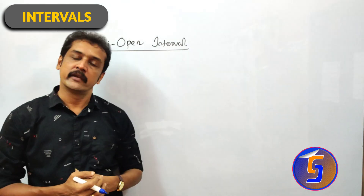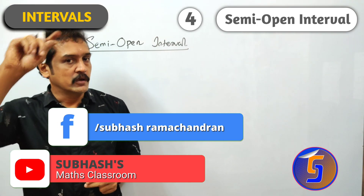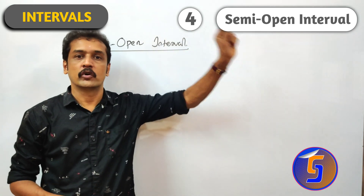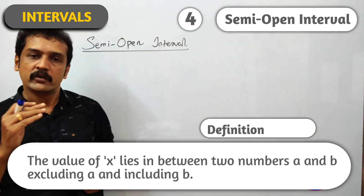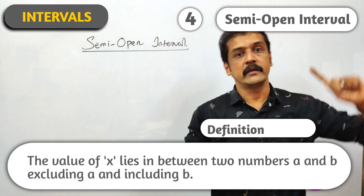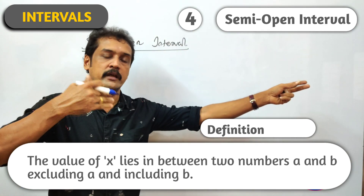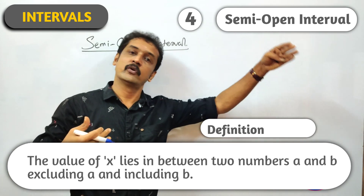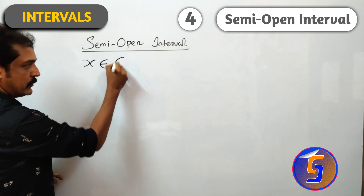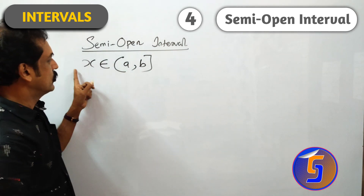The fourth interval is semi-open interval. Semi-open interval starts with an open bracket and ends with a closing square bracket — simple bracket then square bracket. The value of x lies in between two numbers a and b, excluding a and including b. It can be denoted in roster form as x element of semi-open (a, b].